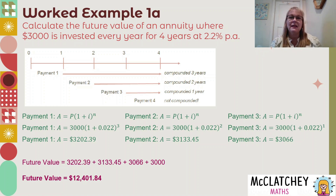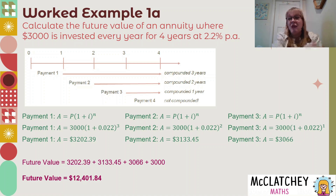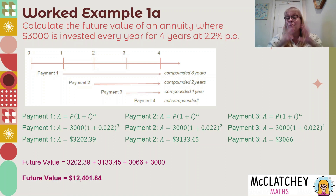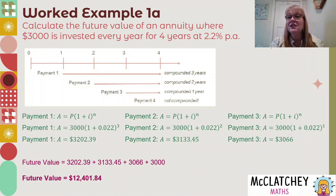You might wonder why interest isn't compounded from the day the payment goes in. Typically with superannuation, the money comes out of your salary and your employer puts it in at their convenience — usually once every quarter. So it won't actually start compounding until the end of that period. That's why it doesn't attract interest until the end of the period. In real life things are more complicated, but for the purposes of our syllabus we focus on interest starting at the end of the period.